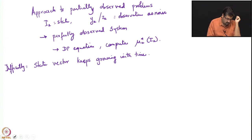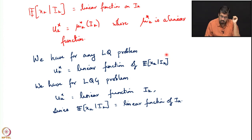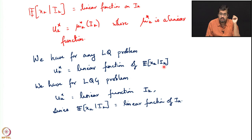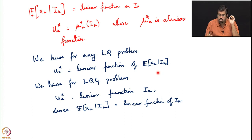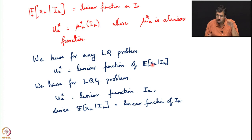However, from the result we just got for linear quadratic problems — without even making the Gaussian noise assumption — the optimal control is a linear function of the conditional expectation of the state given the information. So we are not simply saying the optimal control is a function of the information; we are saying it is a function of something much more specific: the conditional expectation of the state given the information. This quantity, derived from I_k, is enough to define the optimal control.